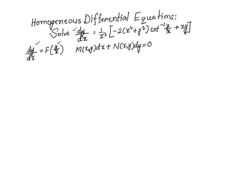It is sometimes also defined as follows: M(x,y)dx + N(x,y)dy = 0 is a homogeneous differential equation if both M and N are homogeneous functions with the same degree. They must have the same degree for the equation to be called a homogeneous differential equation.